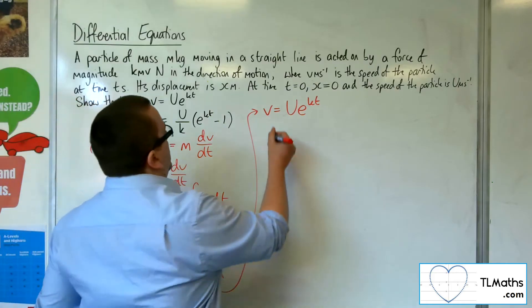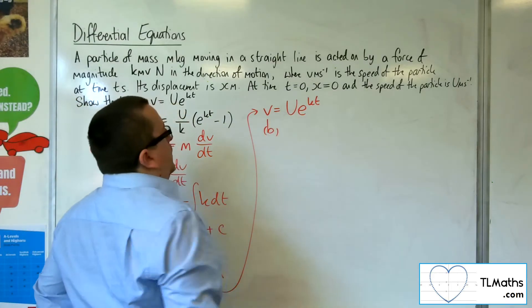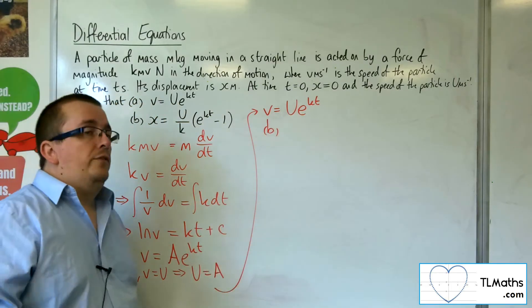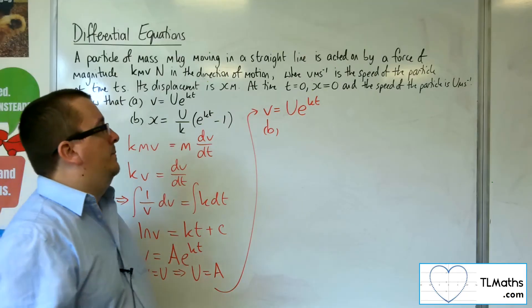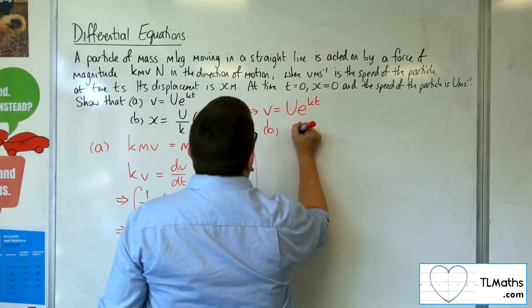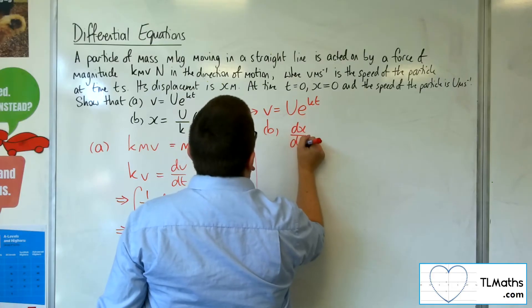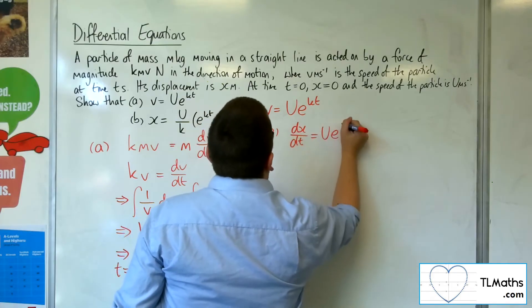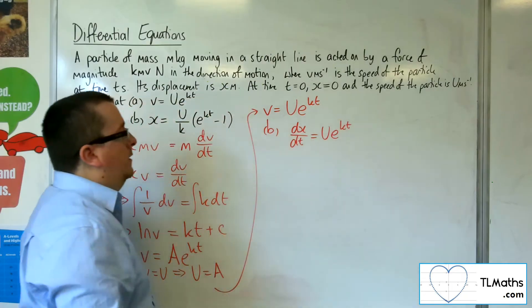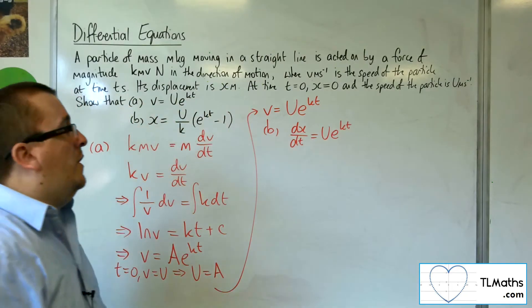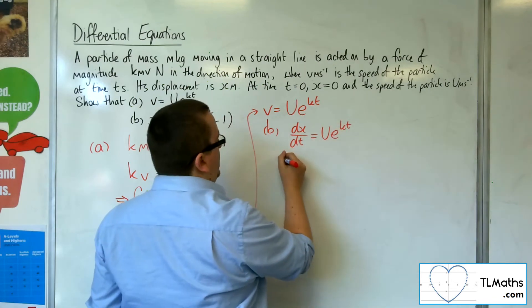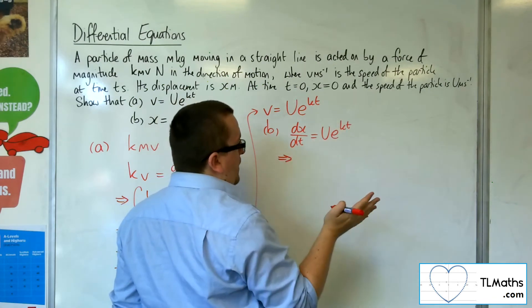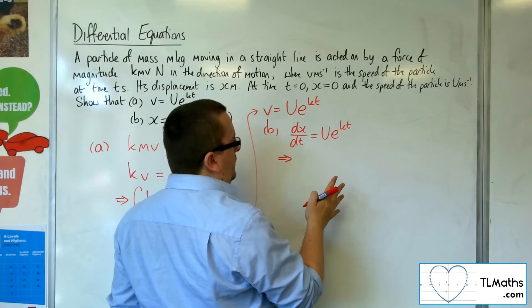Now for b, what you need to remember is that the velocity is the change in displacement over time. So v is dx by dt. What I can now do is rearrange it so I've got all the t's on one side, so multiplying both sides by dt. We can use separation of variables or just integrate both sides.